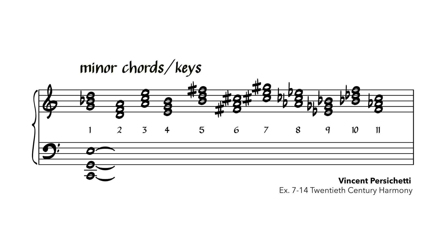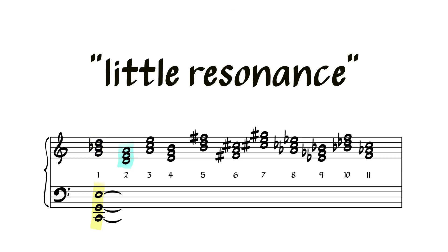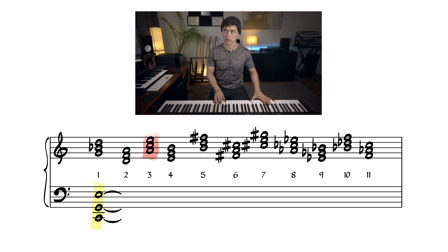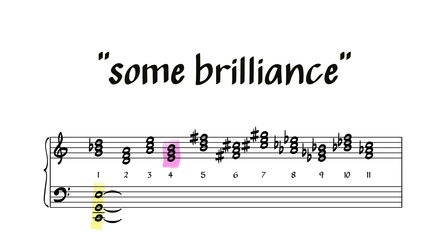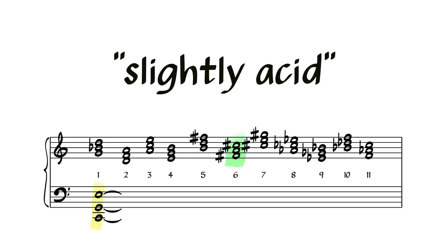Persichetti also has a useful chart for minor keys and chords on top and major keys and chords on the bottom. He annotates them with some colorful descriptors like pale ninth, little resonance, pale seventh, some brilliance, brilliance, slightly acid.